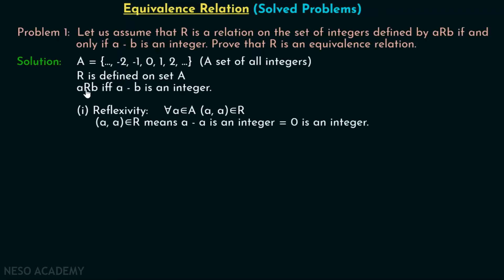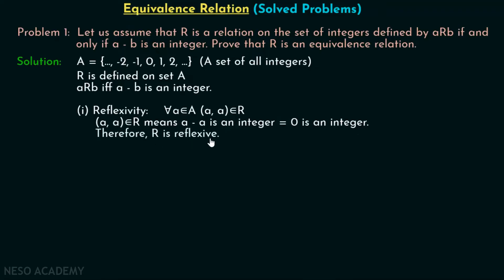We know that A is related to B if and only if A minus B is an integer. So (A, A) belongs to R means A minus A must be an integer. A minus A gives 0, and 0 is an integer. Therefore, R is reflexive. This relation is reflexive.